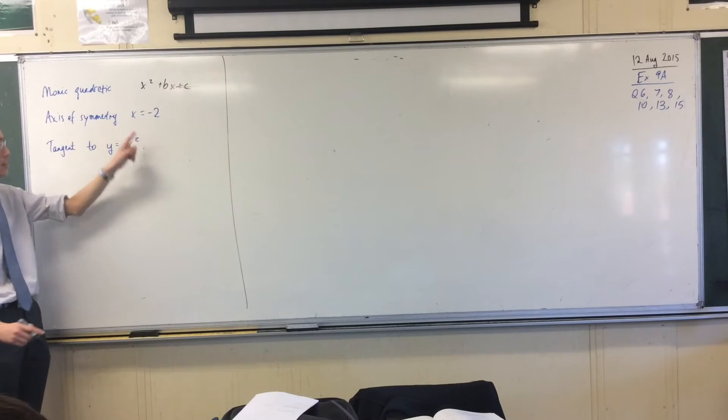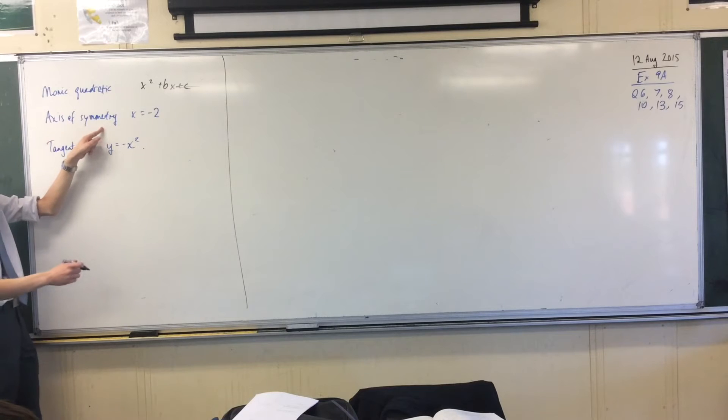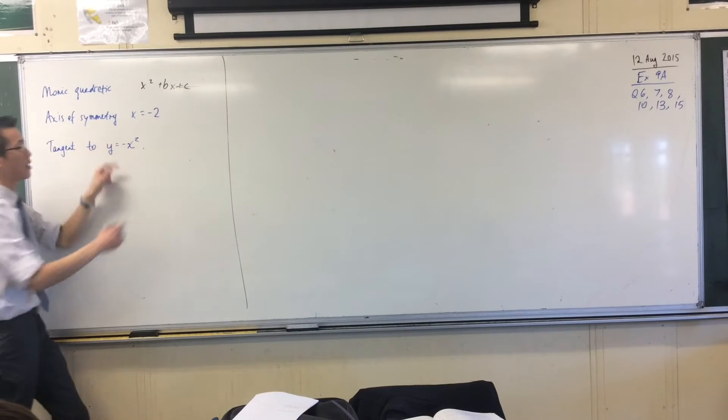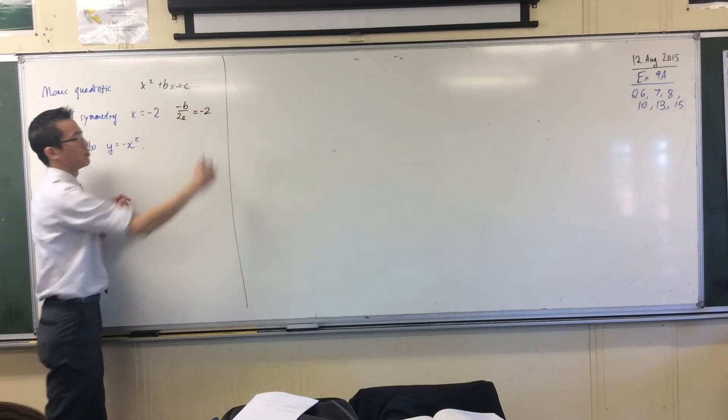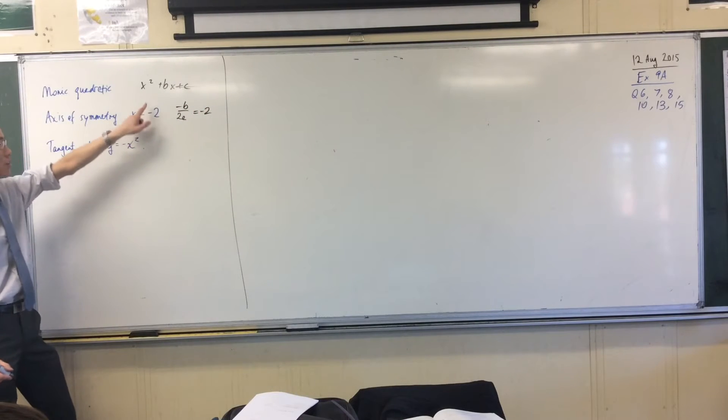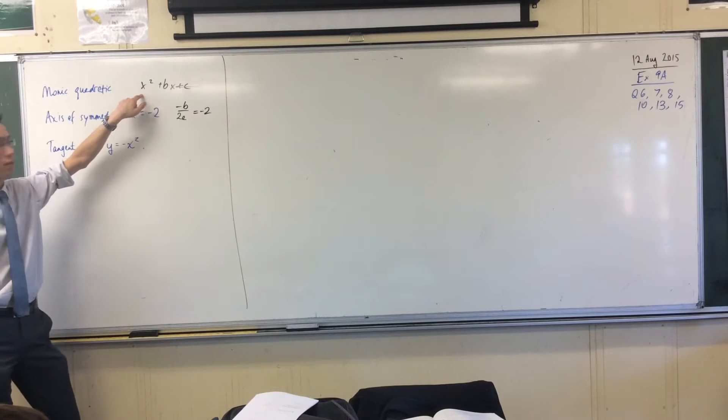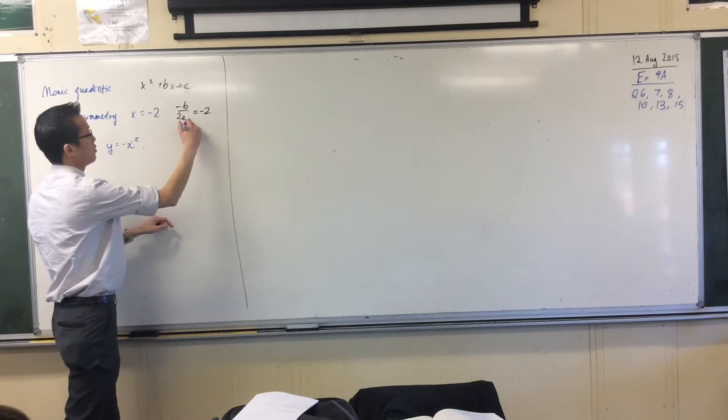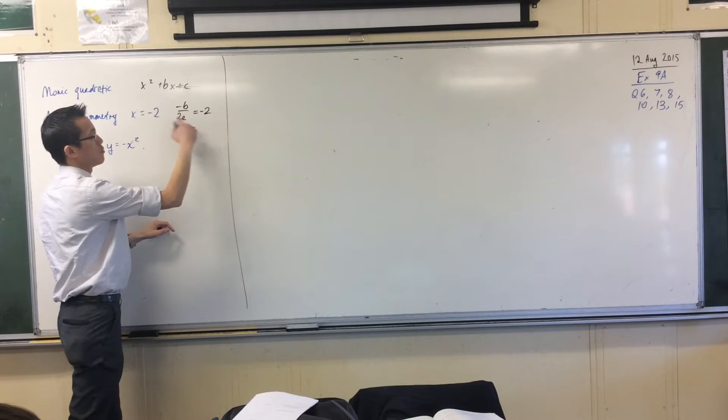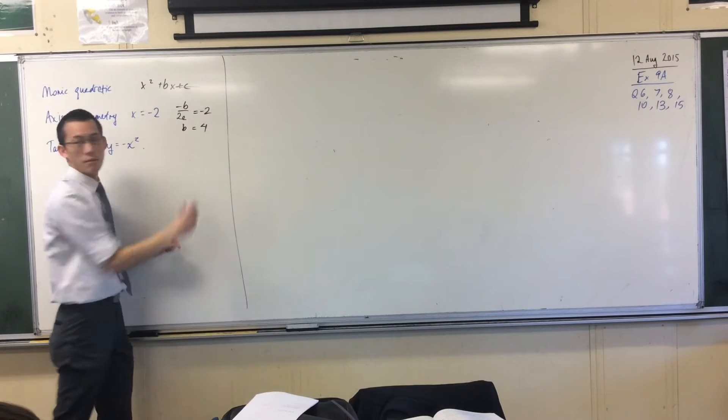If you've got the axis of symmetry being x equals negative 2, the axis of symmetry of course is minus b on 2a. So minus b on 2a, that's equal to negative 2. But you already know what a is, it's monic. So if a is 1, then that gives you b is equal to, you multiply the 2 across and the negative as well, you get 4.